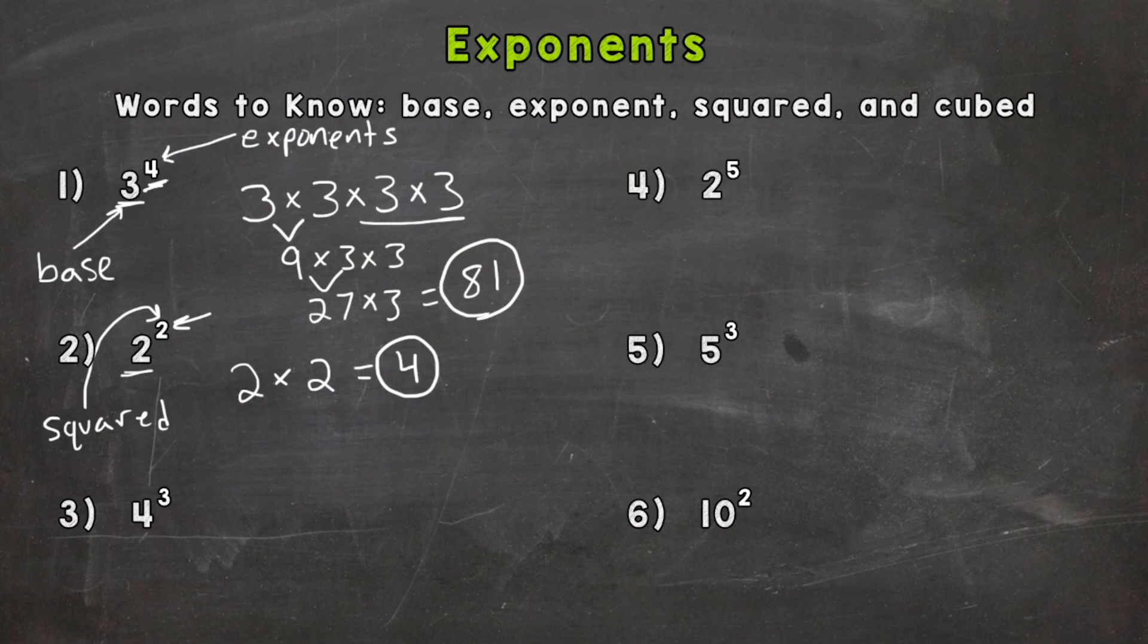So let's take a look at number three here. We have four to the third power or four to the power of three. So this one has a nickname as well. Anything to the power of three, we can say cubed. So you can say this four cubed, four to the third power, or four to the power of three. All are correct. So we take our base and we expand it out three times.